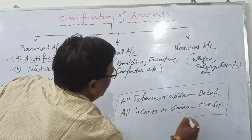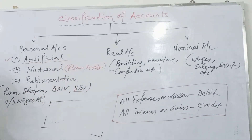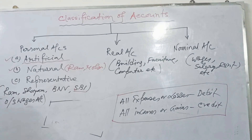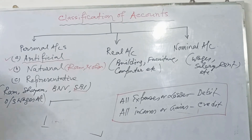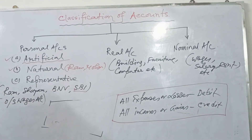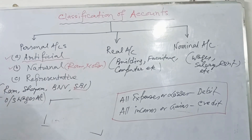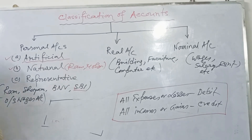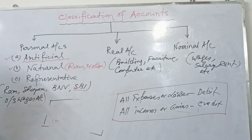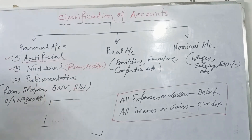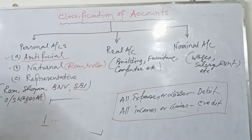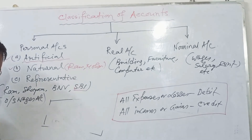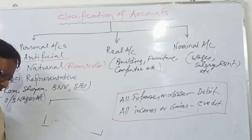Classification: personal account, real account, and nominal account. This is based on the English approach, traditional approach, or double entry system. Every transaction must be recorded on two sides — one debit side and another credit side.